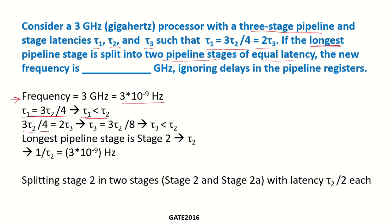It is also given that 3τ2/4 = 2τ3, which means τ3 = 3τ2/8. So τ3 is also less than τ2. That means τ2, which is stage 2, is the longest stage. The clock frequency of the pipeline must equal the reciprocal of the longest stage latency, so the frequency is 1/τ2.